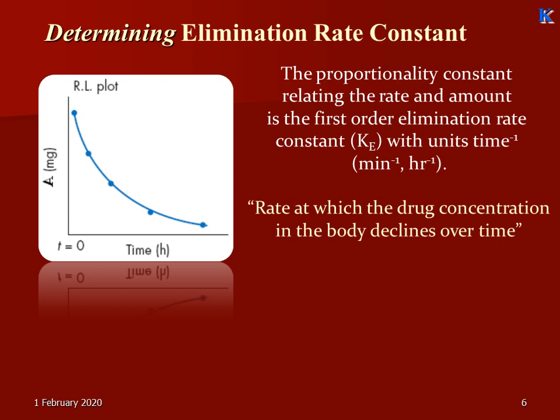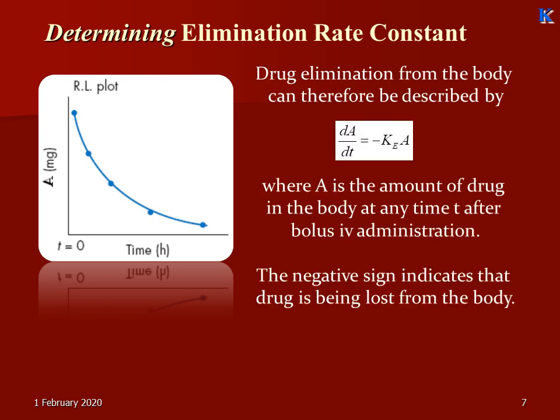Moving towards determining the elimination rate constant. What is the elimination rate constant? It is the rate at which the drug concentration in the body declines over time. It is a proportionality constant relating the rate and amount, and is the first order elimination rate constant with units of time inverse, like minute⁻¹ or hour⁻¹. The drug elimination from the body is described by dA/dt = −Ke · A, where A is the amount of drug in the body at time t after bolus IV administration, and the negative sign indicates that the drug is being lost from the body.